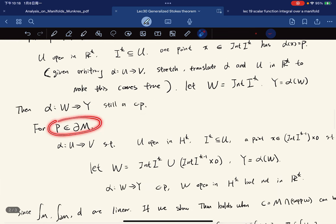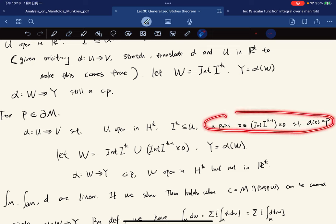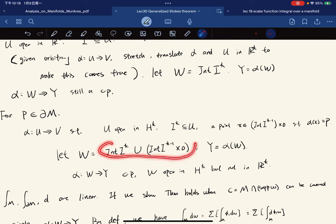And for p is a boundary point, we pick an open H^k, I^k, it belongs to the subset of U, and a point on the bottom face, open bottom face. Now, we set W to be equal to this set. And Y is the image set, so it's another coordinate patch.